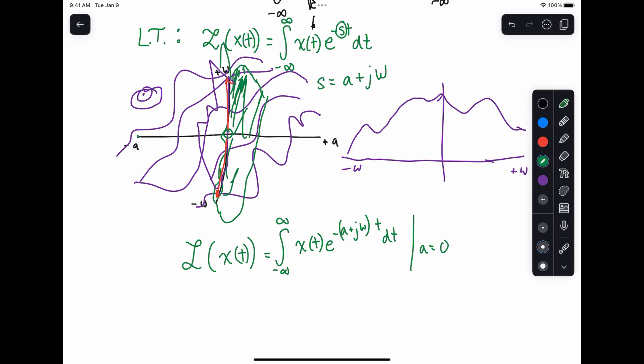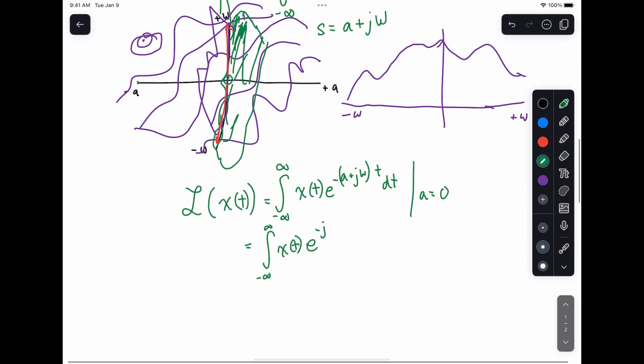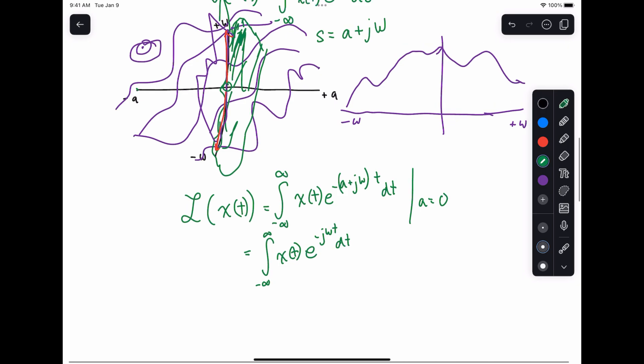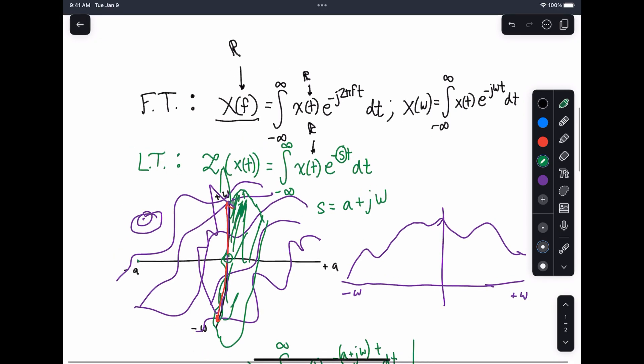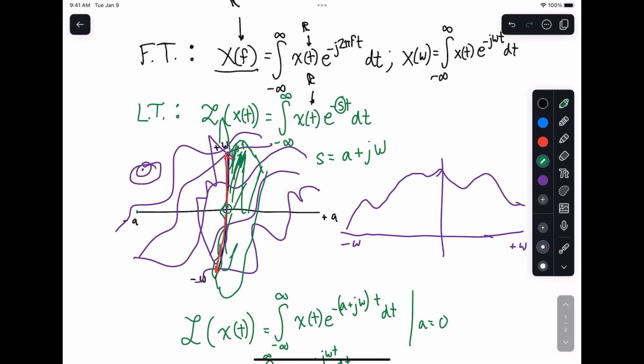And what you get out of this is the integral from minus infinity to infinity, X of T E to the minus J omega T DT. And as you can see, this here is just the Fourier transform in its angular sense. And we can go from angular sense by basically substituting in 2 pi f, which is just going to sort of, if we plot it in terms of f, it's going to kind of squish everything together. But we usually do that because there's pretty much always a 2 pi there. You can thank Euler and all these people for that.